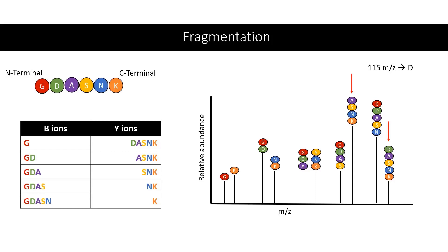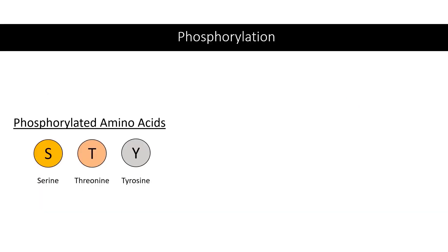The mass spectrometer will continue this process for all of the peaks of interest from the MS-1 spectra, providing you with the sequence of the peptides and ultimately the sequence of the protein molecule. In addition to identifying the sequence of peptides, you can also identify post-translational modifications such as phosphorylation.